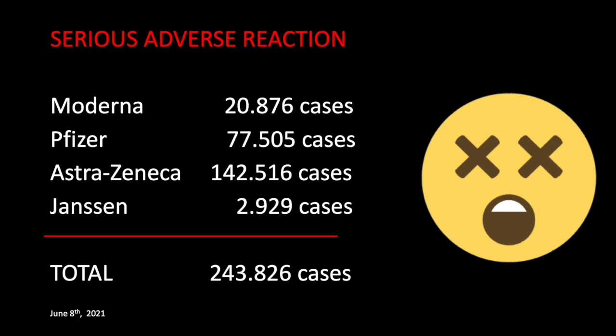Moderna has 20,876 serious adverse reactions; Pfizer has 77,505; and look at AstraZeneca — 140,000 adverse reactions, severe adverse reactions. This means people have been hospitalized or might still be seriously sick. Janssen has only 3,000 cases, but this is probably down to the very low number of vaccinations done with this substance. The total is nearly 250,000 cases in Europe, and this is colossal.